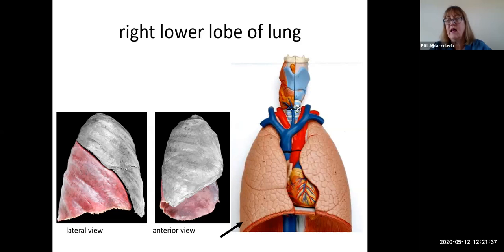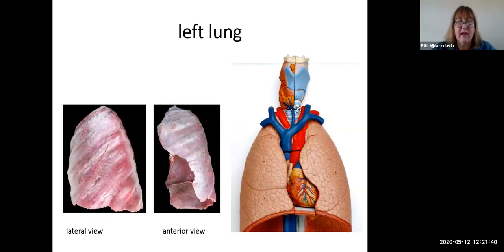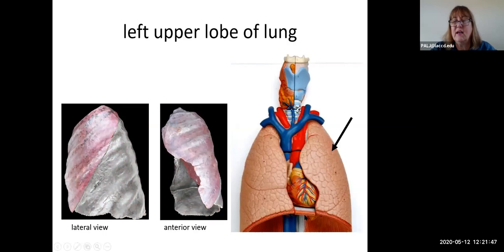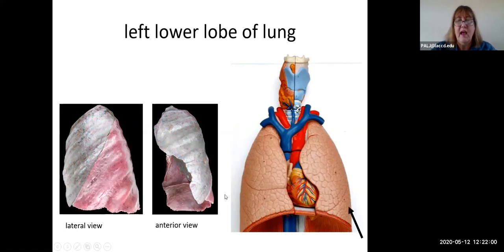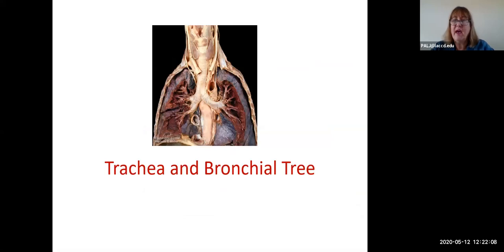The right lung has three lobes. In contrast, the left lung has two lobes. Anteriorly, what you are mostly going to be viewing is just the left upper lobe. In the cadaver picture there's only a tiny bit anteriorly that is not this lobe, and that is the left lower lobe or inferior lobe on the left side.